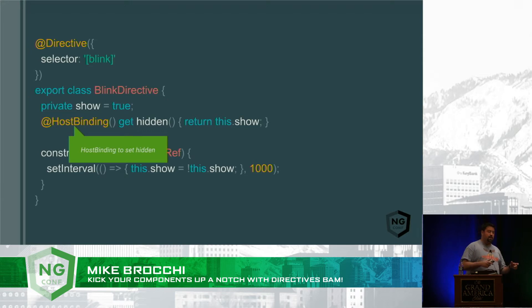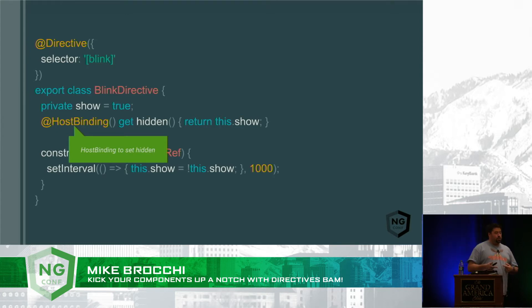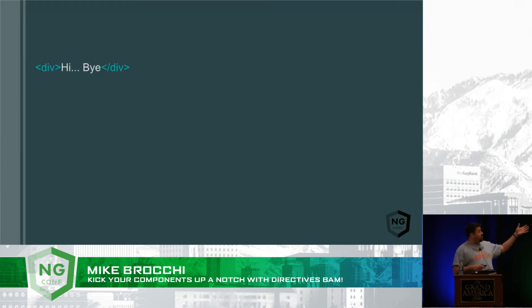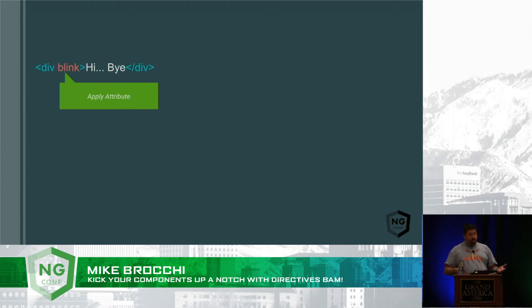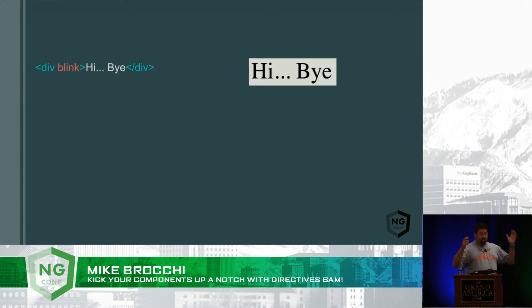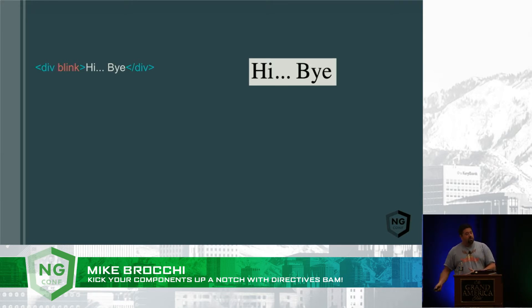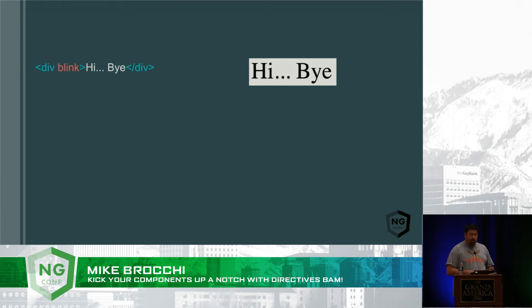We're using something called host binding. Host binding gives you the ability to modify different properties on the host element that you've applied your directive onto. In this case I'm looking at the hidden property. I have this element and I'd like it to blink, so I just sprinkle that on there and get my blink attribute added to that tag. We apply it by adding it onto the DOM element, and we see the happy little blinking text within our application. We've done nothing to the component itself — in fact it wasn't even a component, just a div tag — and we've added behaviors onto it just by adding an attribute.